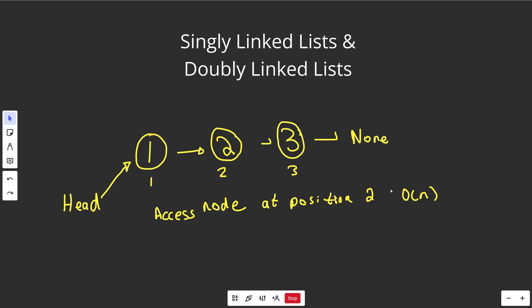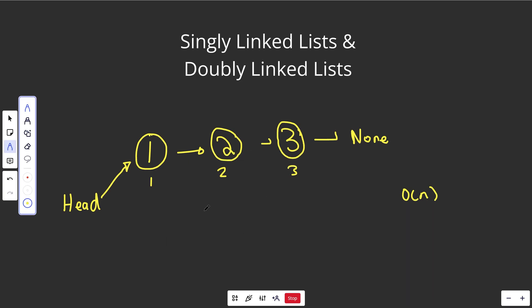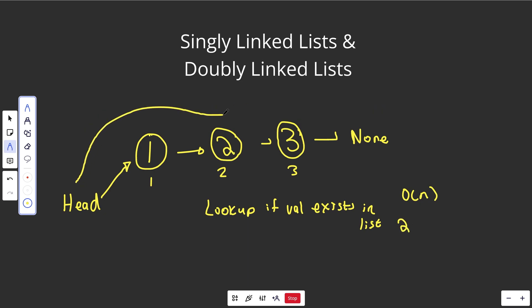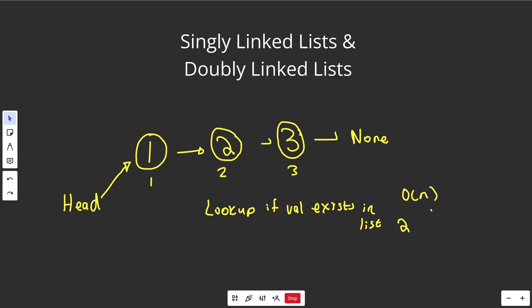An operation we generally perform on every data structure is lookup — in this case, seeing if a certain value is in the linked list. You can probably guess that's going to be an O(N) operation, because in the worst case you'd have to go through the entire list and not find it. Even if you were looking up something like 2, you'd go through and see that 2 is there, but that's still O(N).